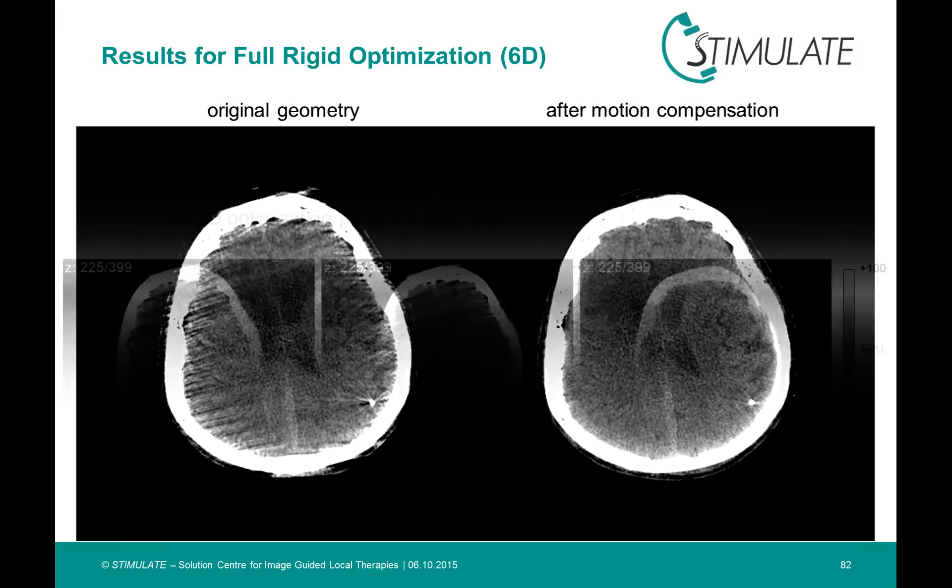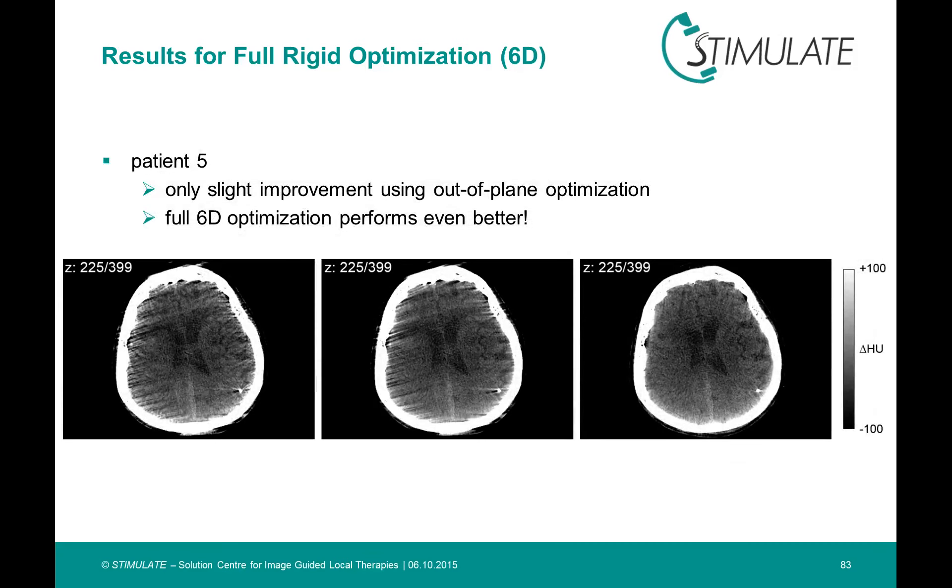This is the comparison of the original geometry left. In the middle the reconstruction after an out of plane optimization. And finally on the right the correction of the full 6D parameter vector including the in-plane parameters.